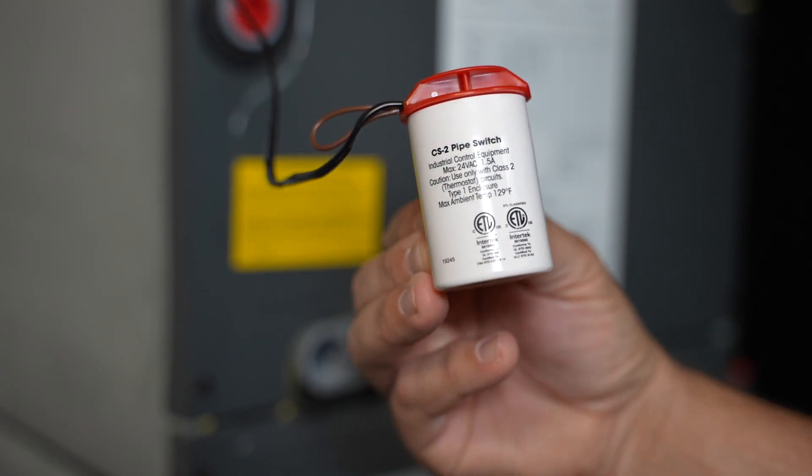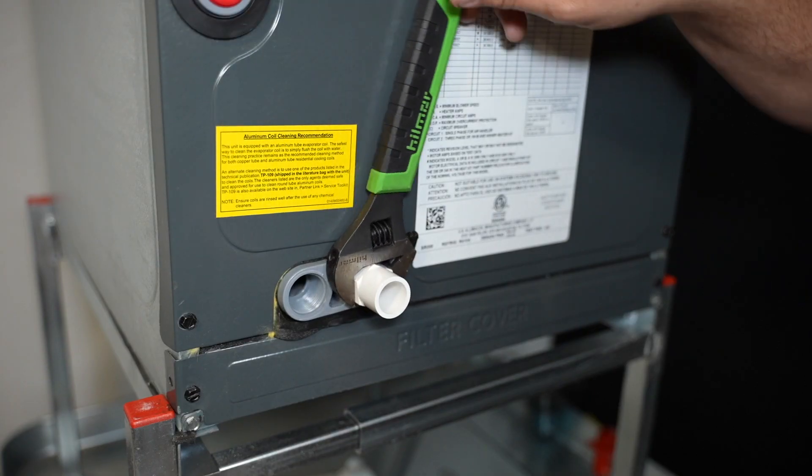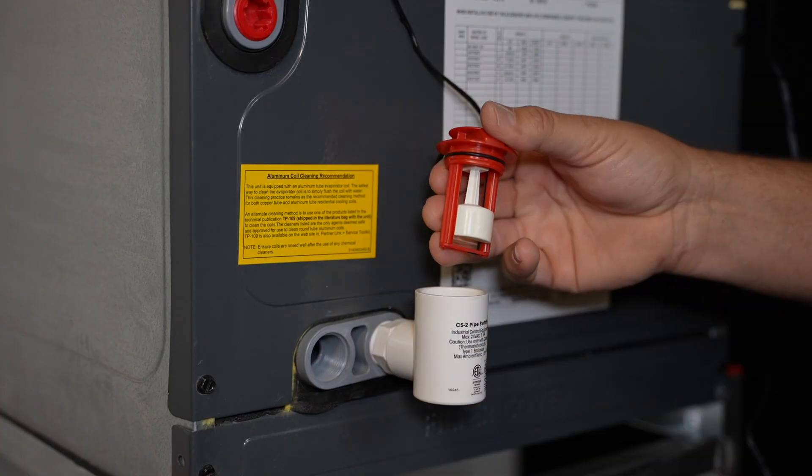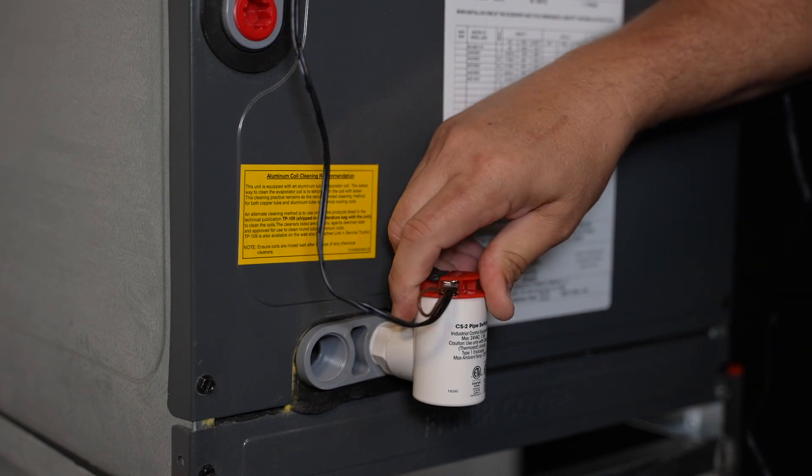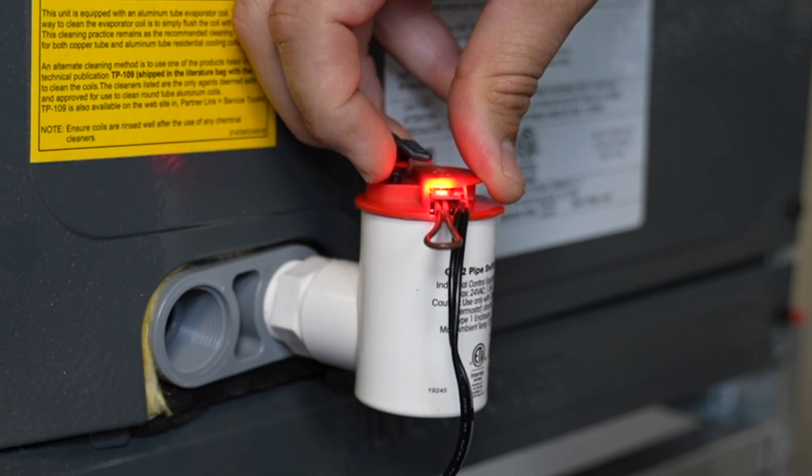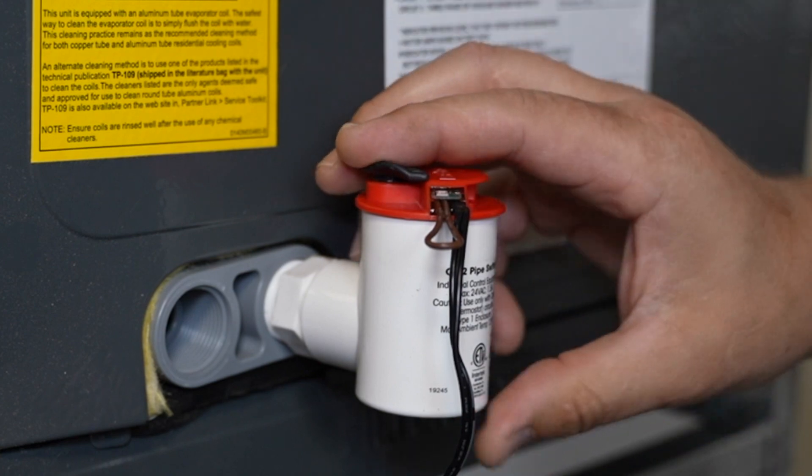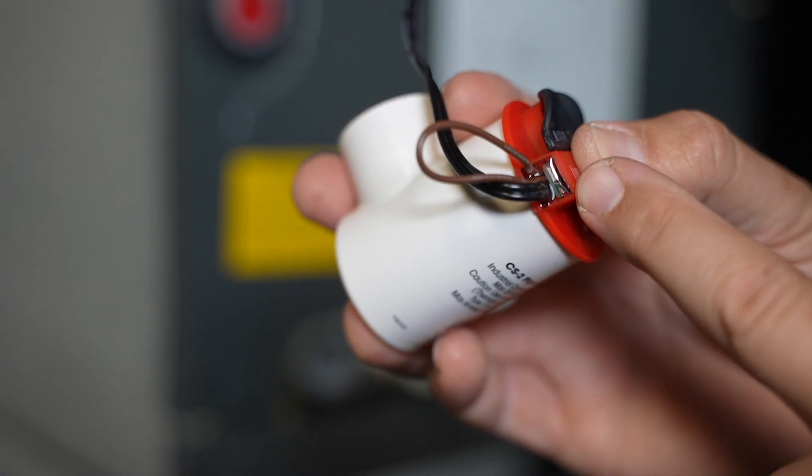Let's start with the primary pan. The CS2 condensate overflow switch is for the secondary port of the primary pan on the air handler. The pull lever makes it easy to test functionality. The LED activates when the condensate line is blocked. It has built-in protection against power surges.